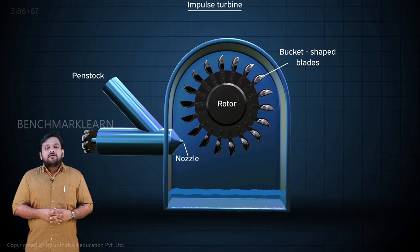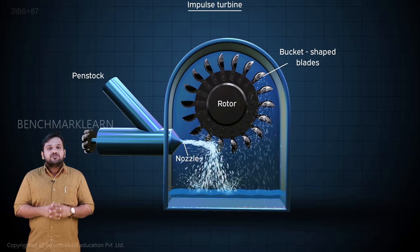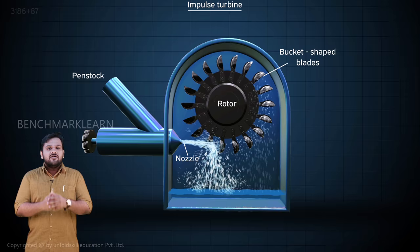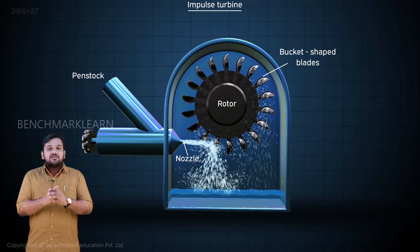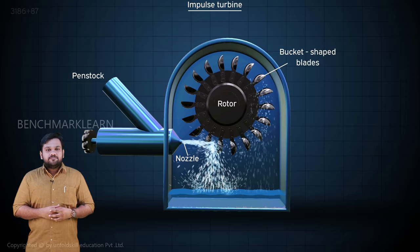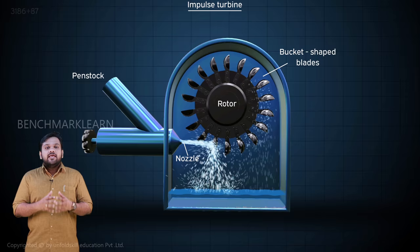This water, when it strikes the curved surface of the bucket, imparts its energy to the bucket, which in turn results in the rotation of the bucket. Due to the curvature of the bucket, the direction of the water jet is almost reversed to get maximum force. This reversal is by about 165 degrees. The flow rate of water controlled at the nozzle helps in determining the speed and power generated at the rotor.